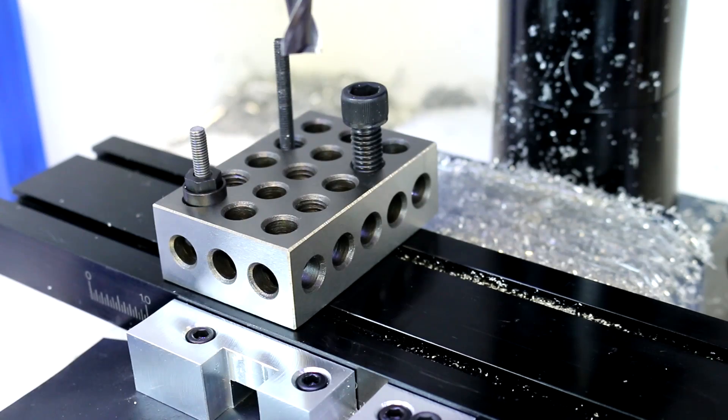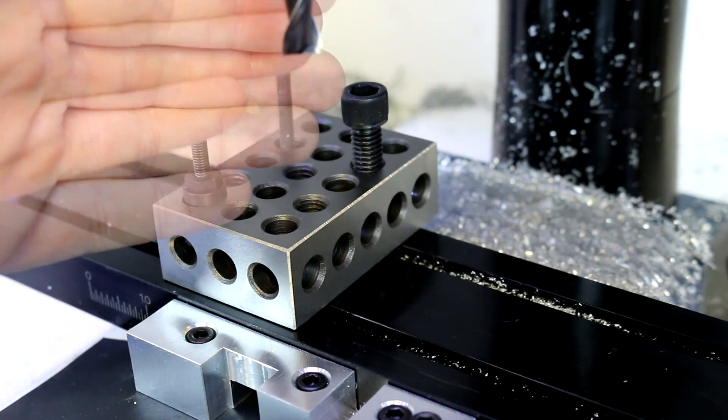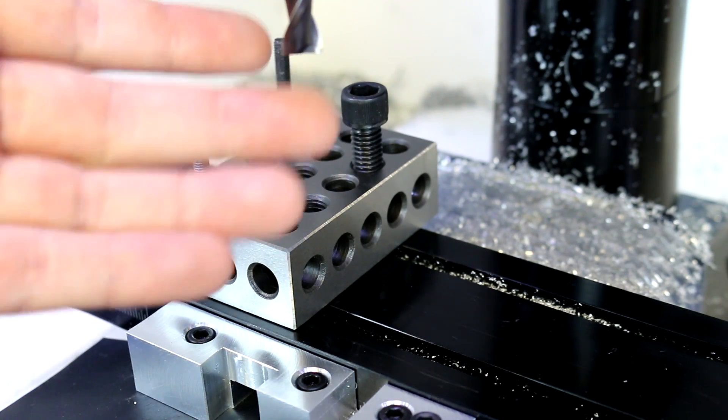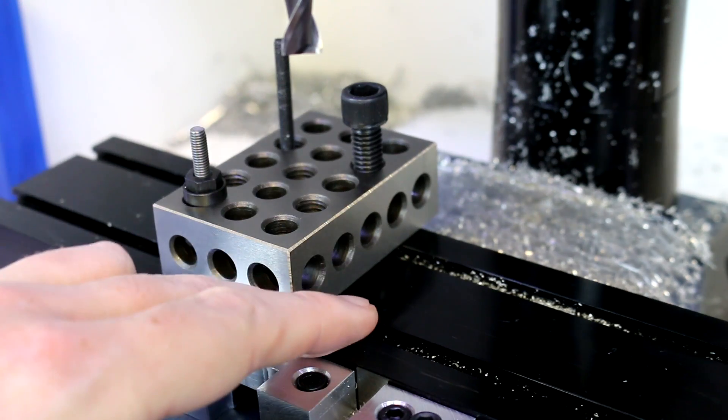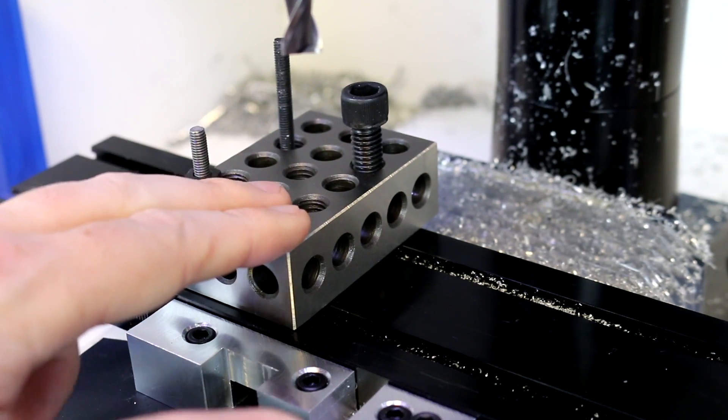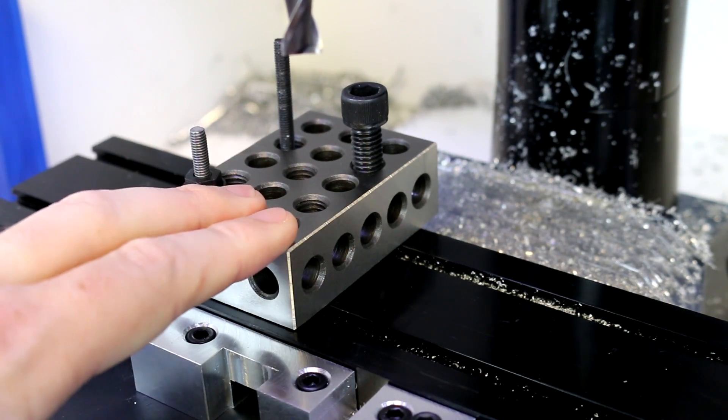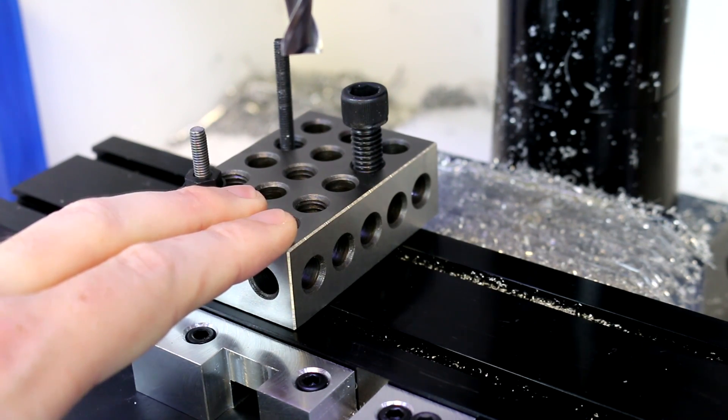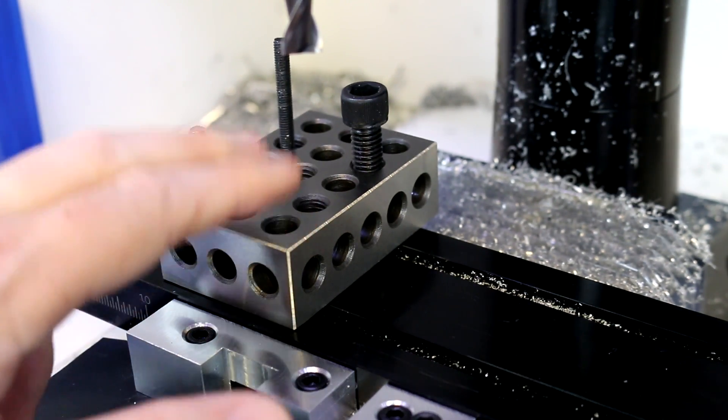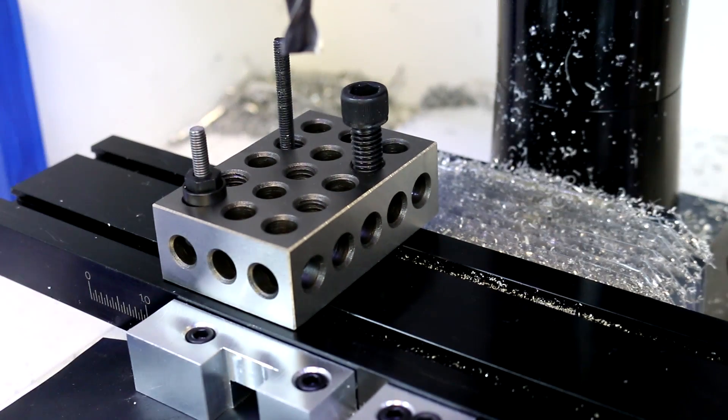This is really useful because on the Sherline, with the column and the three inserts on it, it's difficult to get a cutter all the way down to the table. So often times you'll need to raise the workpiece up. These are also very useful for large workpieces that won't fit in the vise, and for a variety of operations. You'll see me using these in many of my videos.